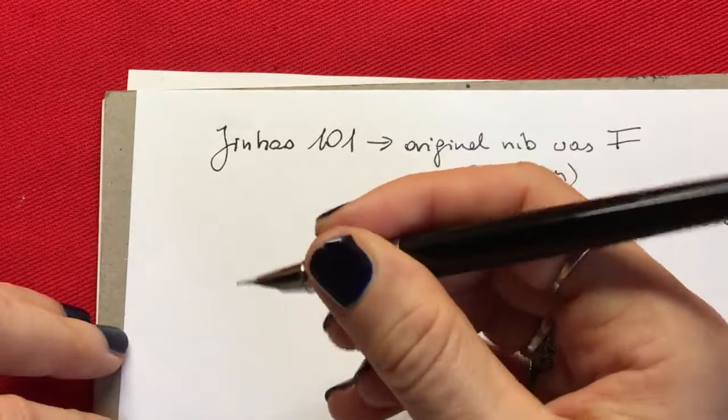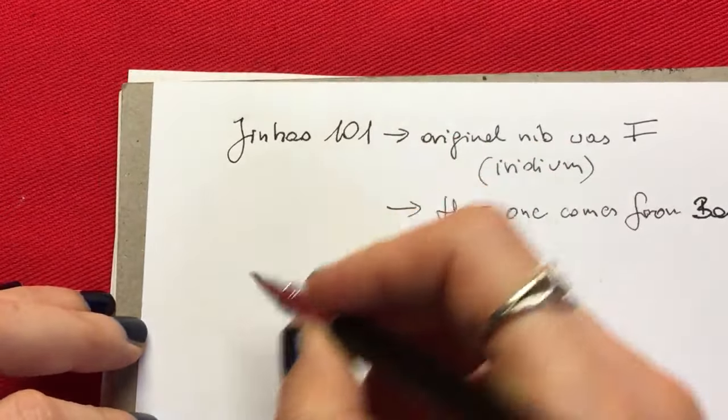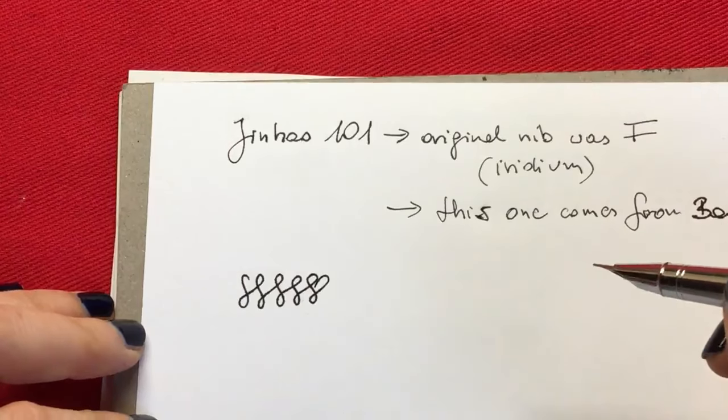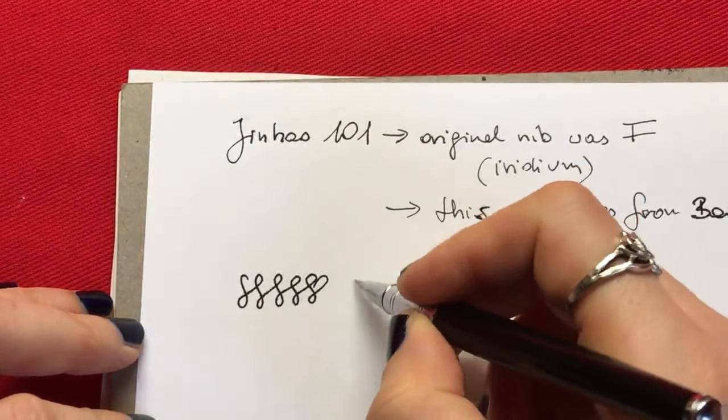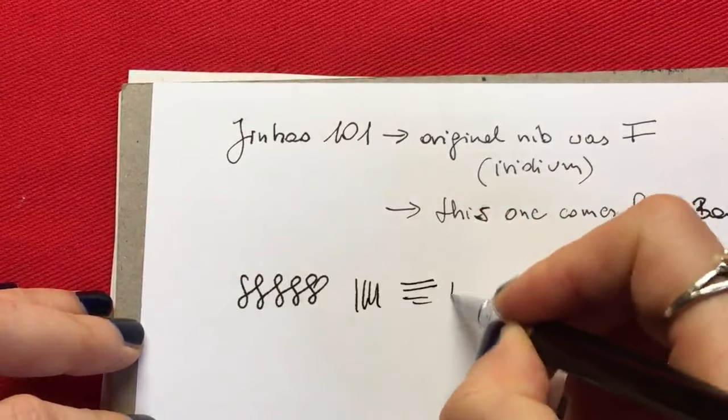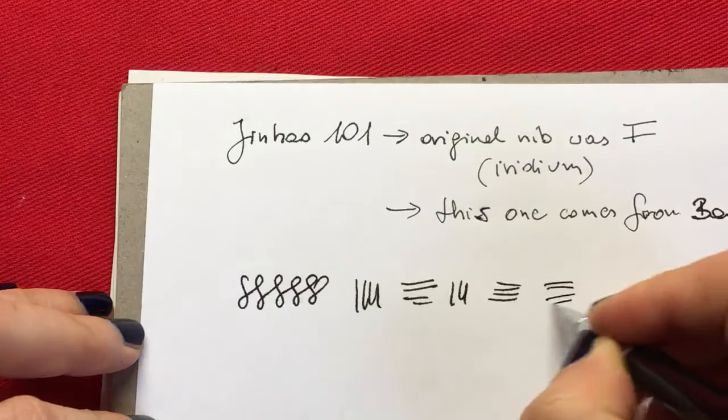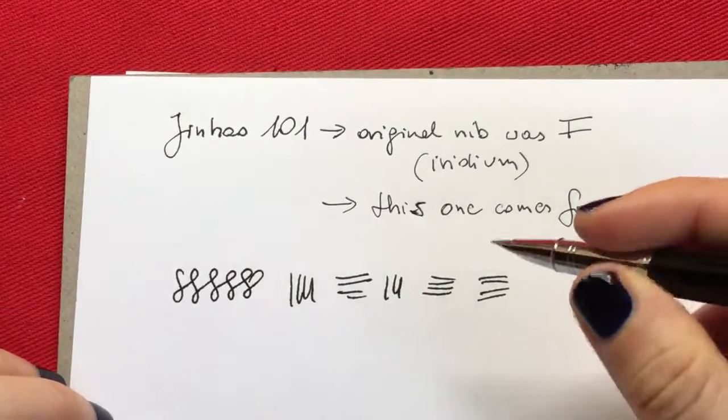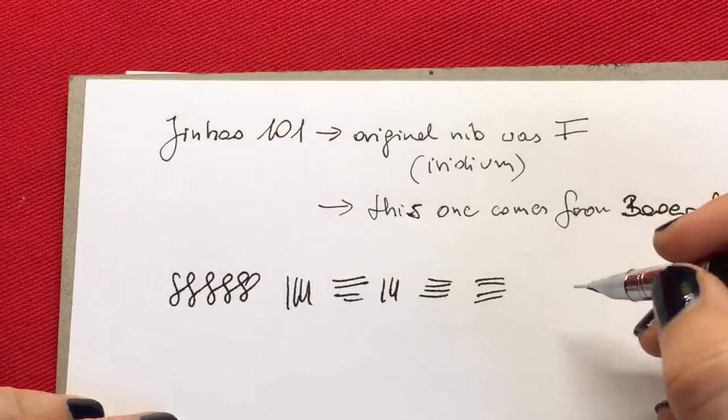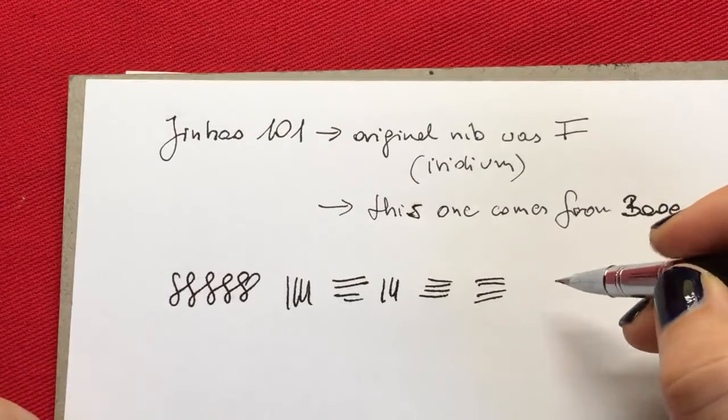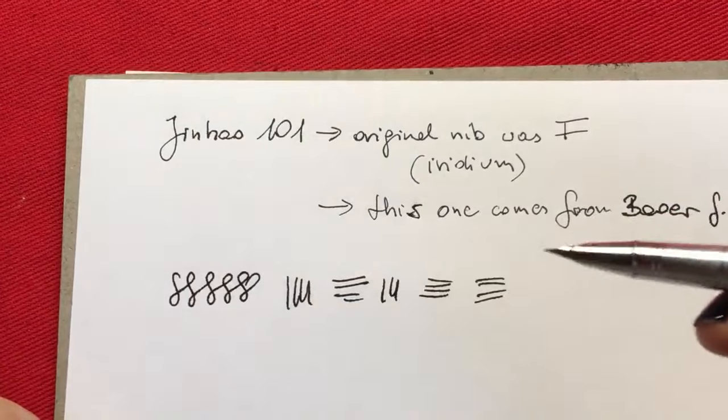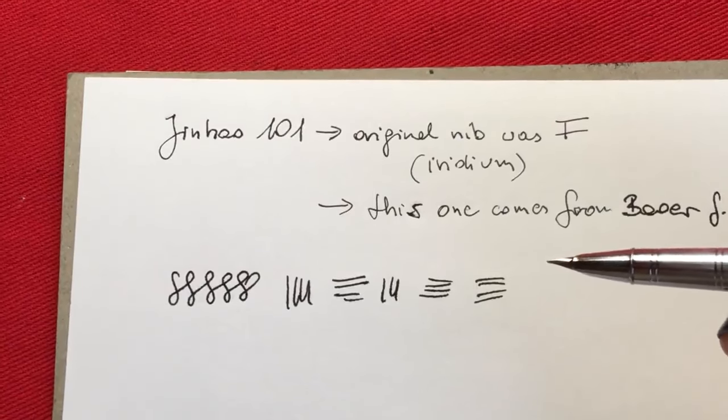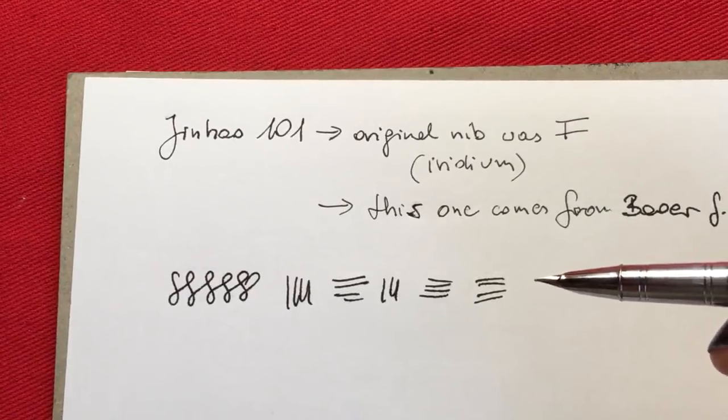So we're going to test a completely different nib from a completely different pen, but you have an idea how the Jinhao pen looks overall. The Baoer nib is very smooth and it really is recommended to have it. The Jinhao was similar - I remember that it gave me good writing for quite some time.